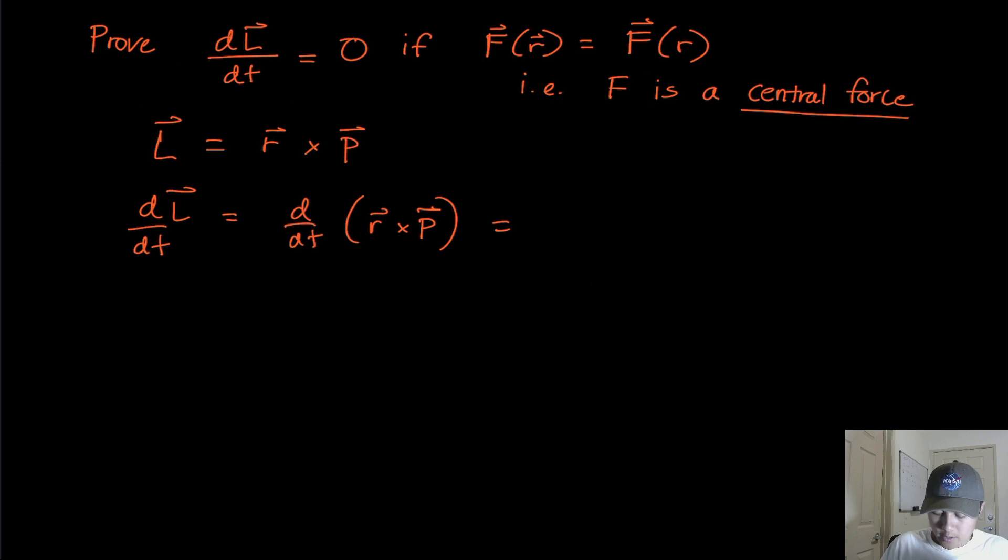So the first derivative we're going to take is with respect to R. So it's dr/dt. Now that's going to cross the momentum vector. And then this needs to add the cross product of R cross dp/dt. Okay, hopefully that's simple enough.